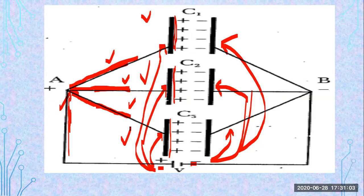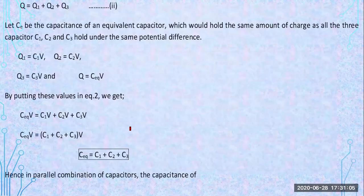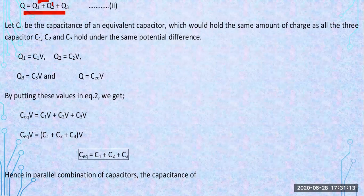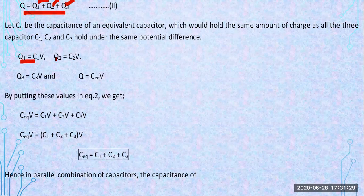The total amount of charges supplied is divided into three capacitors. We add up all the charges to show that the battery supplied this total, divided among three capacitors, and their sum equals the total. Using Q = CV: Q1 = C1·V, Q2 = C2·V, Q3 = C3·V.